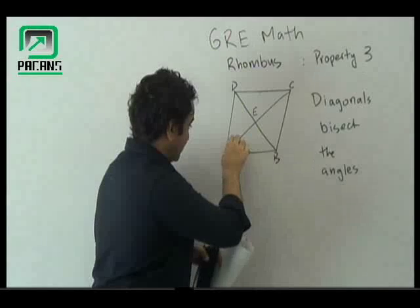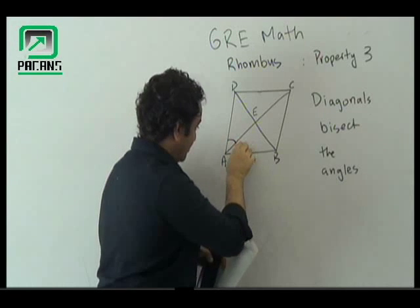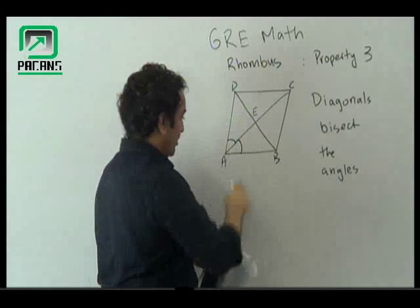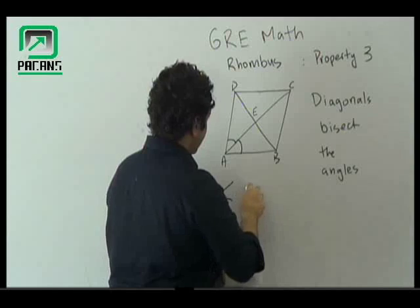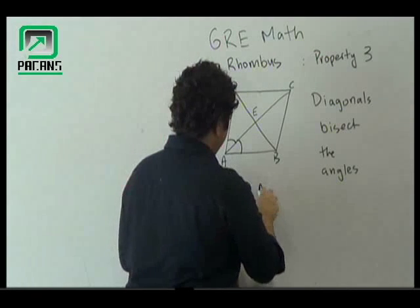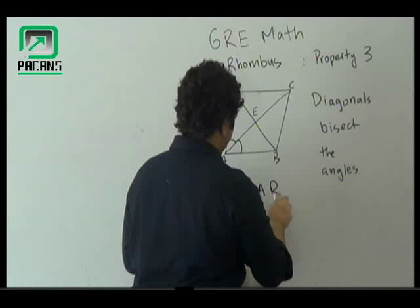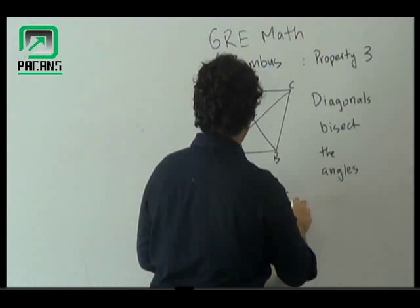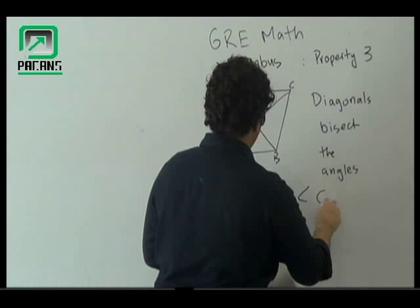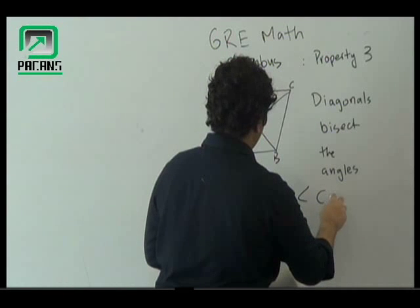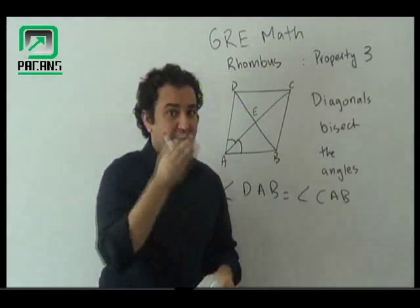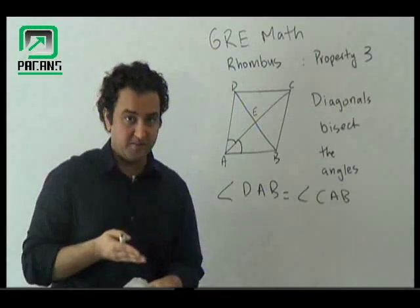That means this thing is going to be equal to this thing. So, angle DAB is going to be equal to angle CAB. So, the diagonals would be bisecting the angles.